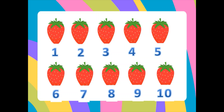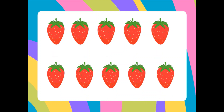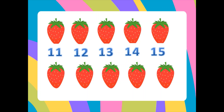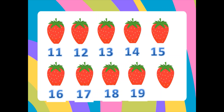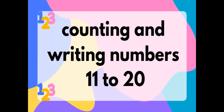So how many strawberries will there be if we are going to add 10 more? Let's continue counting. We have 11, 12, 13, 14, 15, 16, 17, 18, 19, 20. We have 20 strawberries in all. So if we're going to add 10 more, we continue counting from 11 to 20. Did you get it, children? Very good!